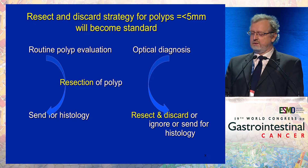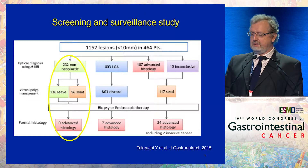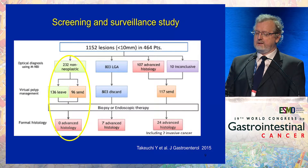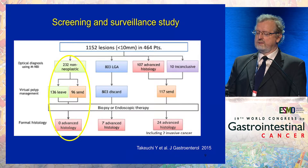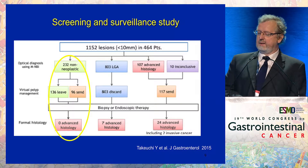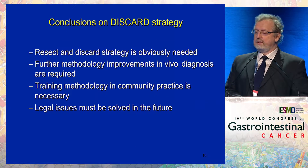Or we can ignore the lesion or send for histology. The optical diagnosis using MNBI has selected 233 neoplastic lesions as opposed to cancers and advanced histology, and in all cases this was correct. Of course, this is in a specialized center, but we need better data on a larger number of patients.